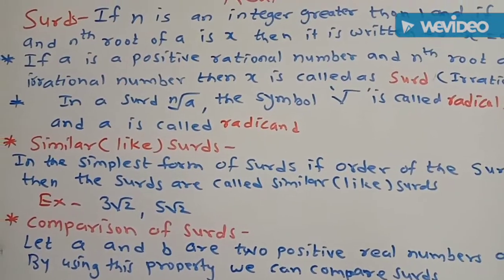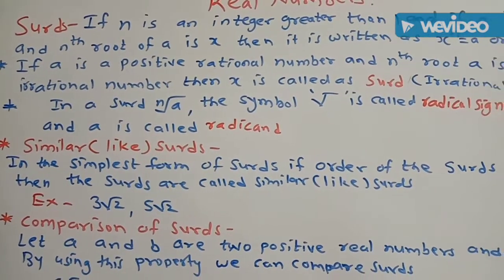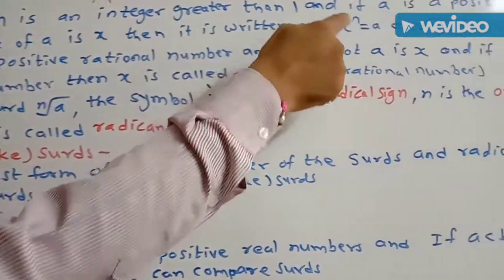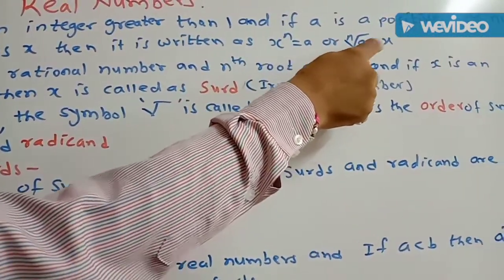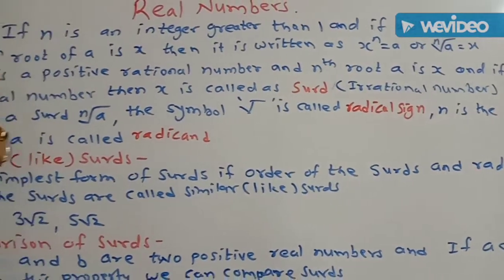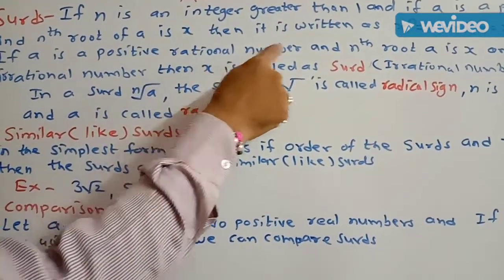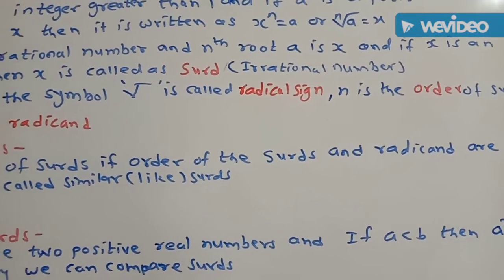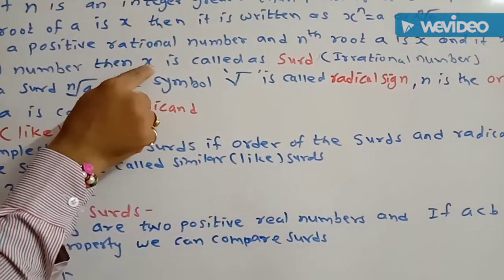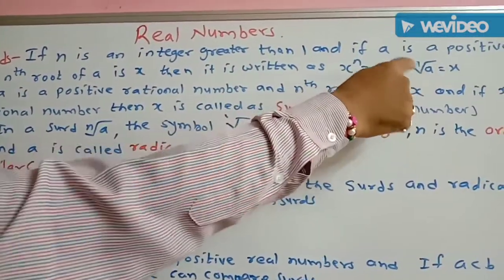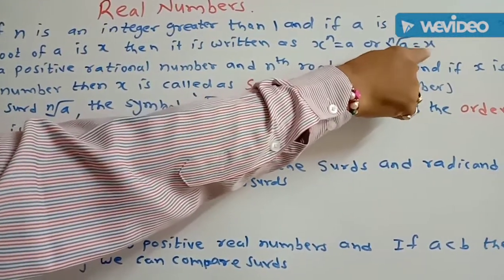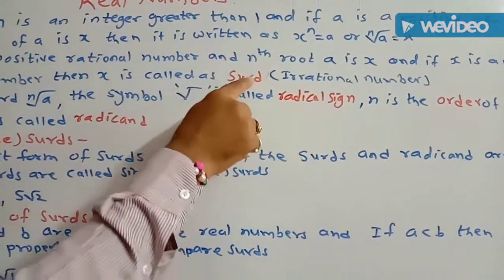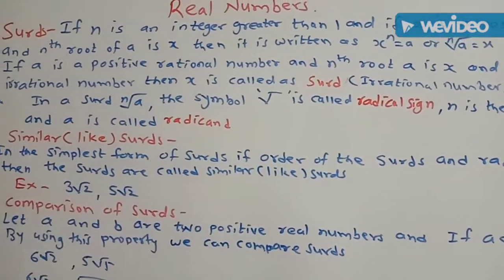If n is the integer greater than 1, a is the positive real number, and nth root of a equals x, that is x raised to n equals a, then if a is a positive rational number, the nth root of a is x, and if x is an irrational number, then this x is called a SIRD. That means nth root of a equals x and x is an irrational number — it is not a rational number. If it is an irrational number, then it is called a SIRD.